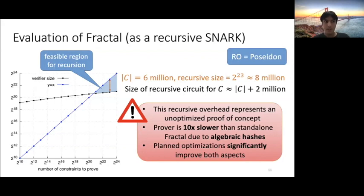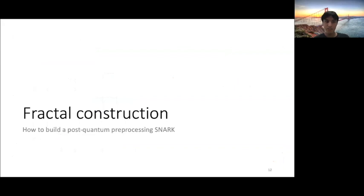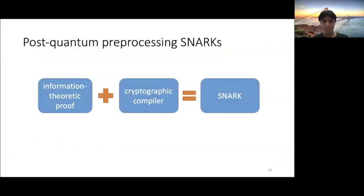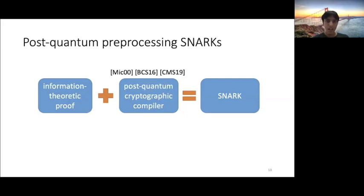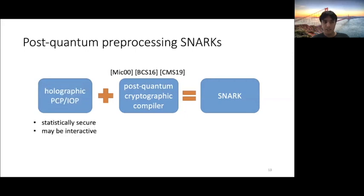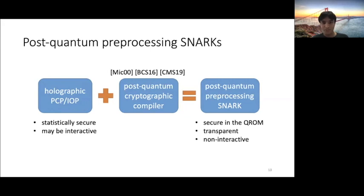So this is all I want to say about the theorems of our work. And now I want to go into a bit of how do you actually create a post-quantum preprocessing SNARK? So all SNARKs have sort of looked like this. You start with an information theoretic proof system, and you have a cryptographic compiler. You combine these together and you'll get a SNARK. So because we want a post-quantum SNARK, we're going to need a post-quantum cryptographic compiler. And because we want to be preprocessing, we're going to need what's called a holographic proof system. Combining these, we'll get a post-quantum preprocessing SNARK.